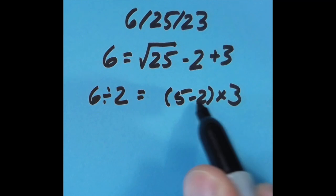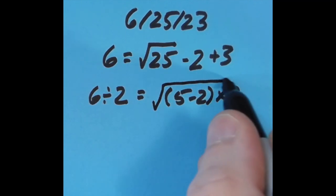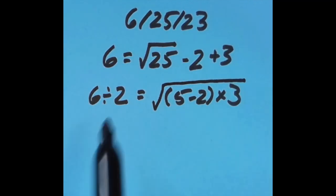5 minus 2 is 3. 3 times 3 is 9, and the square root of 9 is going to be 3, just like 6 divided by 2.